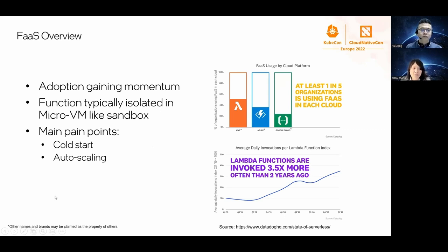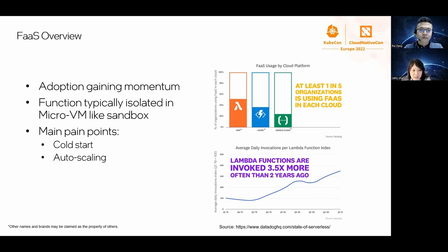FaaS is the future of cloud computing and is gaining a lot of momentum in the industry. The diagrams on the right are sourced from Datadog. The top diagram shows the percentage of organizations using FaaS provided by AWS, Azure, and Google Cloud — at least one in five organizations is adopting FaaS. The bottom diagram shows the average daily invocations per Lambda function indexed from 2019 to 2021, where Lambda functions are invoked 3.5 times more often in 2021 than in 2019. To support multi-tenancy and security, functions are usually run inside a micro VM-like sandbox.